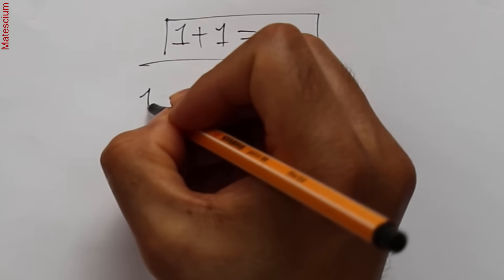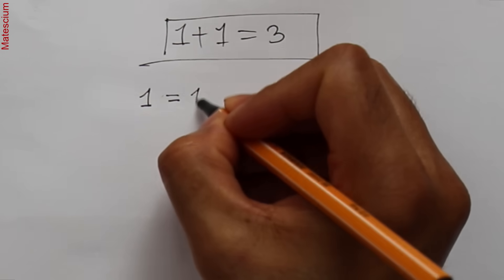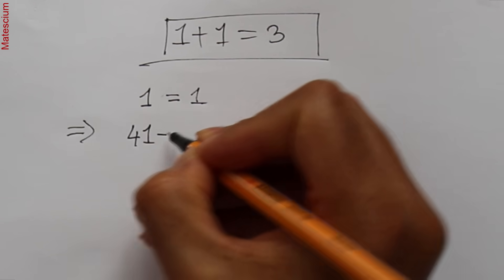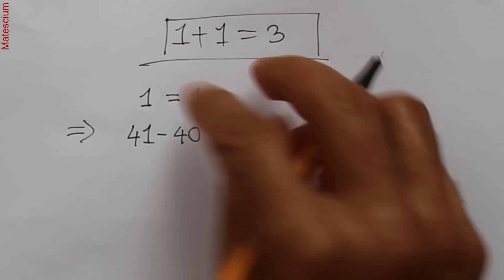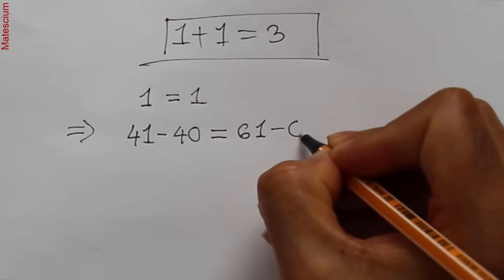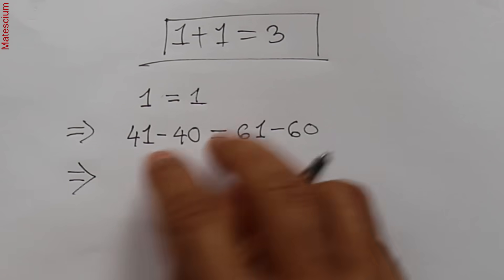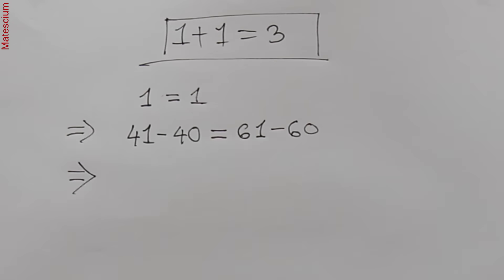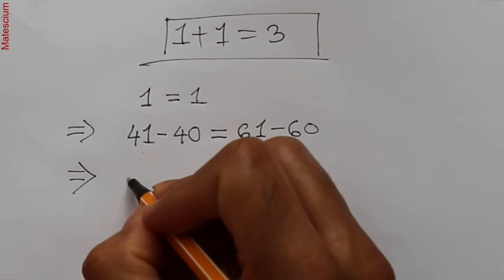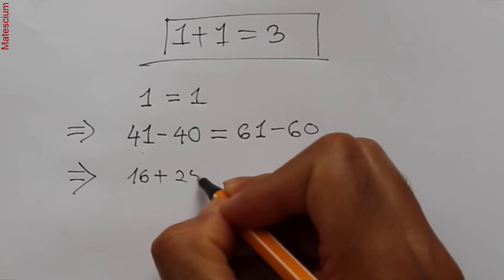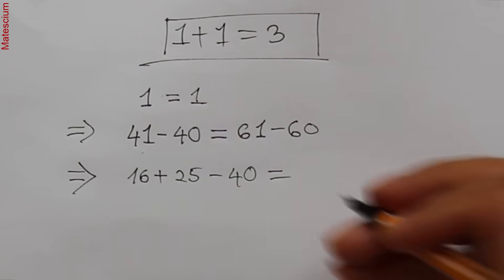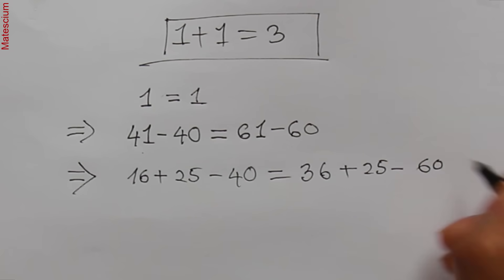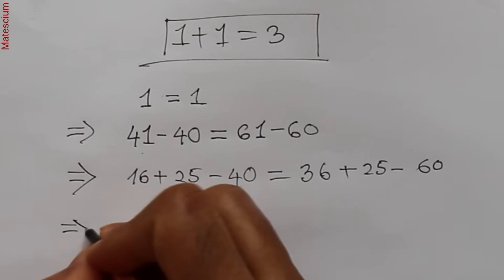To prove that 1 plus 1 equals 3, I'll consider one on the left hand side and another one on the right hand side. I can rewrite the left side as 41 minus 40, and the right side as 61 minus 60 — since 41 minus 40 is 1 and 61 minus 60 is 1. Now I can rewrite 40 as 16 plus 25, and on the right side rewrite 61 as 36 plus 25 minus 60.